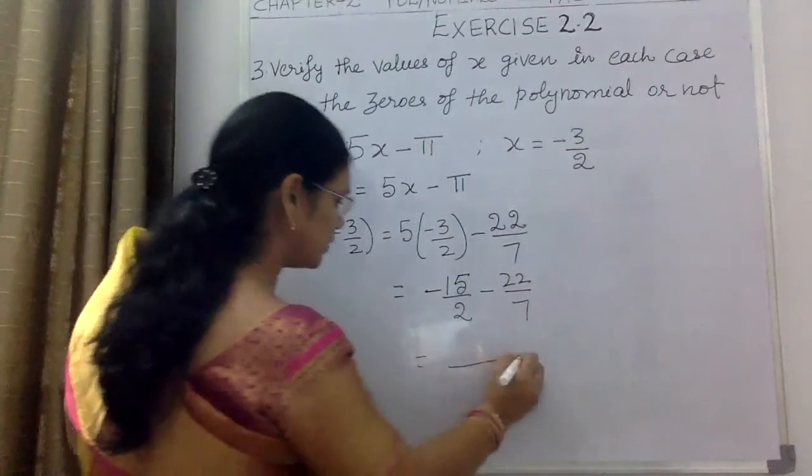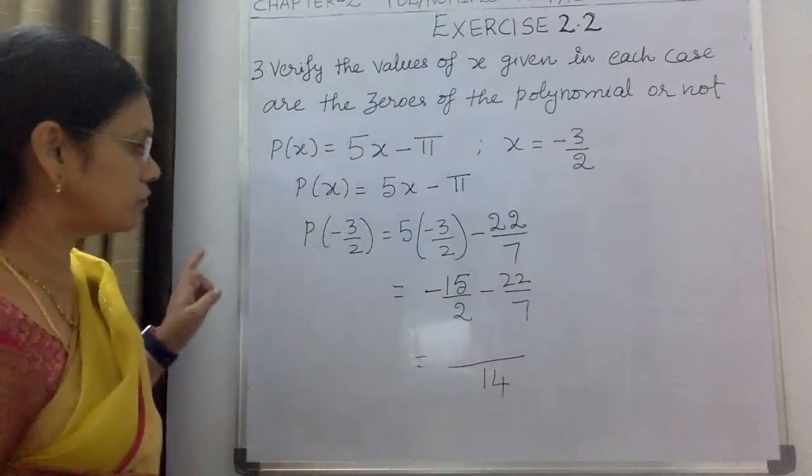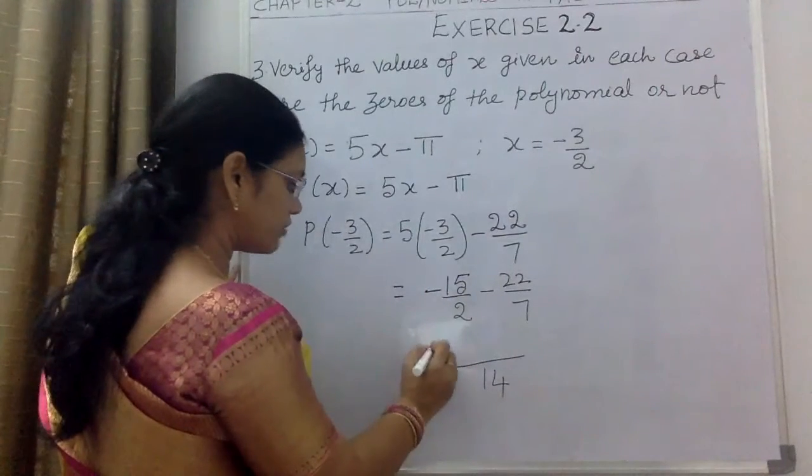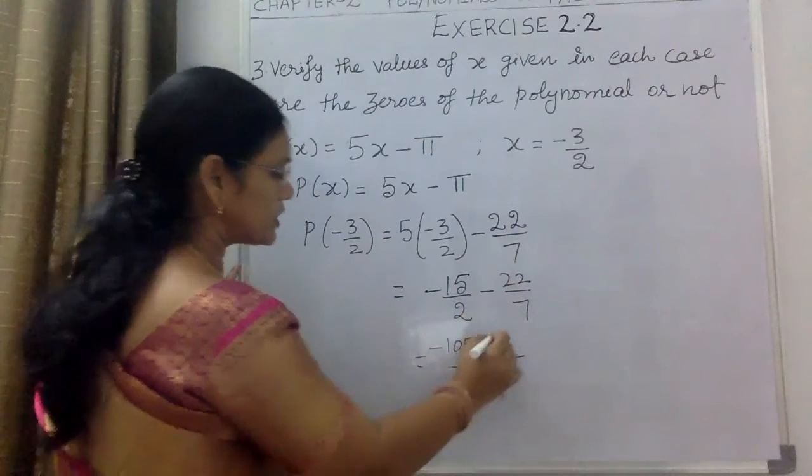The LCM will be 14. Converting: -15 × 7 = -105, and 22 × 2 = 44.